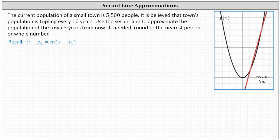The current population of a small town is 5,500. It is believed that the town's population is tripling every 10 years. We're asked to use the secant line to approximate the population of the town three years from now. If needed, round to the nearest person or whole number.